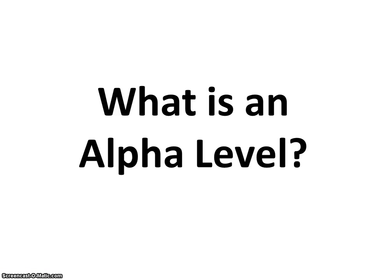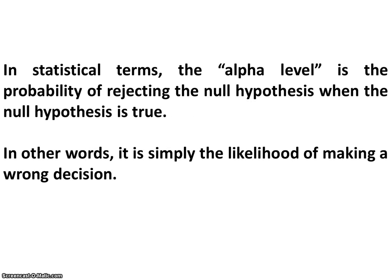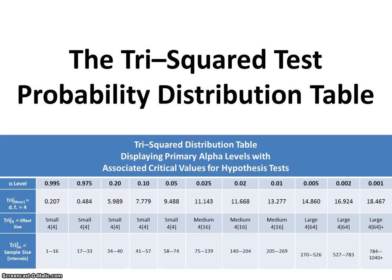What is an alpha level? In statistical terms, the alpha level is the probability of rejecting the null hypothesis when the null hypothesis is true. In other words, it is the likelihood of making a wrong decision regarding the null hypothesis — the inability to reject it. On the Tri-Squared Test probability distribution table, the alpha levels are set by sample size. Once you have your n-tri, or the number of participants in your sample, you have the given alpha level associated with that sample according to its effect size and the given critical value.